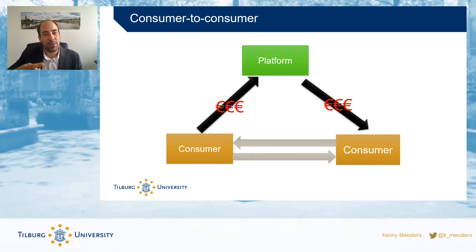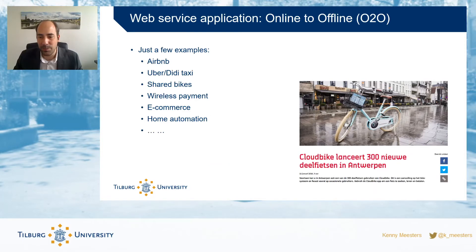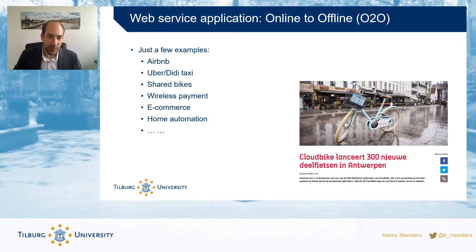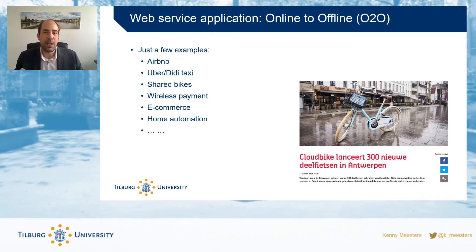The platform introduction is re-intermediation. Examples you probably know are Airbnb — Airbnb does not, or has very limited own locations, but rather connects people that do have a location with somebody who doesn't. Same for Uber, shared bikes, wireless payments, and so on.